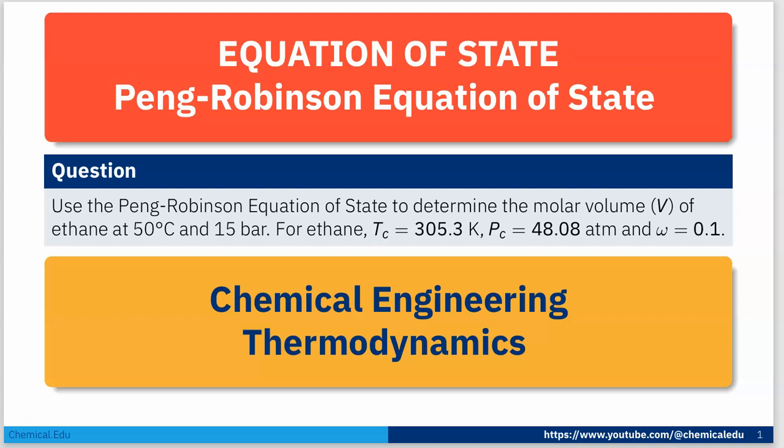Today I'm going to solve an equation of state problem using the Peng-Robinson equation. The question is: use the Peng-Robinson equation of state to determine the molar volume V of ethane at 50°C and 15 bar. For ethane, Tc = 305.3 Kelvin, Pc = 48.08 atm, and omega (the acentric factor) = 0.1.